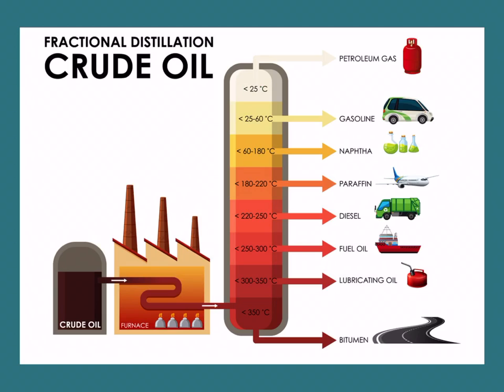After naphtha, we have gasoline, or petrol, which is our motor fuel. Most people think of petrol as one substance, but in fact it's a mixture of up to 100 different hydrocarbons, ranging in carbon chain length from C5 to C10. These are all alkanes.